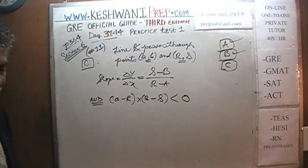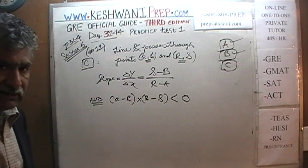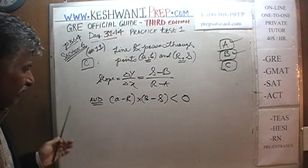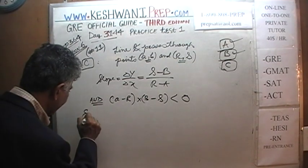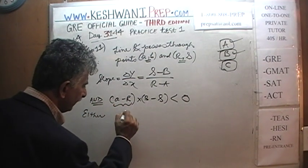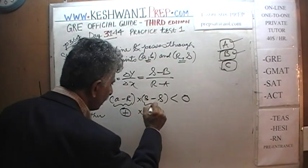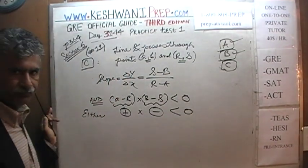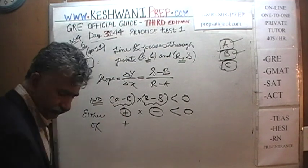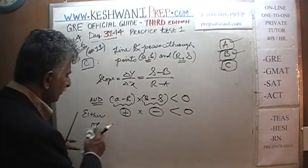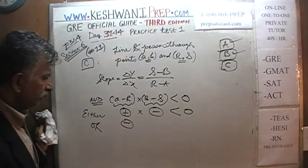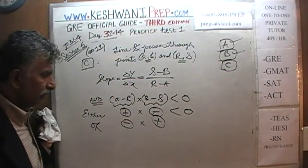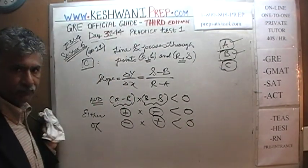Let's finish analyzing. If we multiply numerator and denominator of (S − B) / (R − A) by negative one, we get (B − S) / (A − R). Now, if A − R is positive, then since (A − R)(B − S) is negative, B − S must be negative — giving slope = negative / positive = negative. Or if A − R is negative, then B − S must be positive — giving slope = positive / negative = also negative.